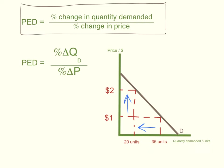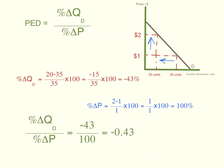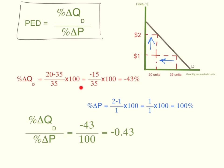So how do we calculate price elasticity of demand? The formula is percentage change in quantity demanded divided by percentage change in price. Let's calculate the top part of the formula — percentage change in quantity demanded. Any percentage change would be new minus old, divided by old, times 100. So you would get the new quantity, which is 20, minus the old quantity, which is 35, divided by the old quantity, which is 35. So 20 minus 35 divided by 35 times 100 gives you minus 43%.